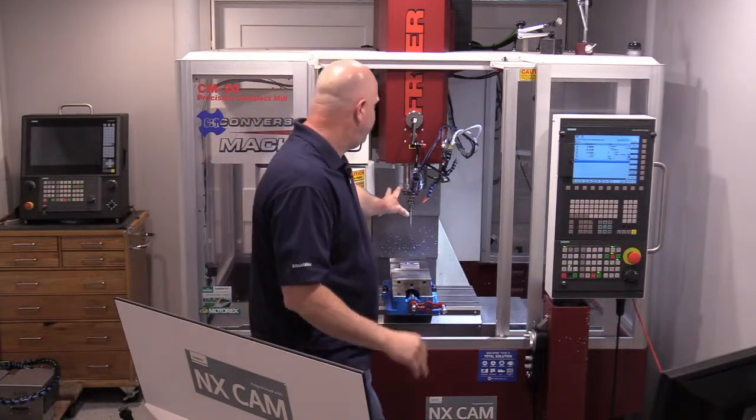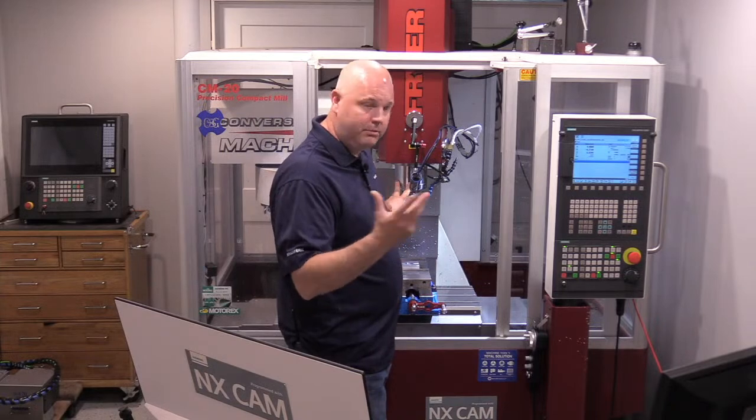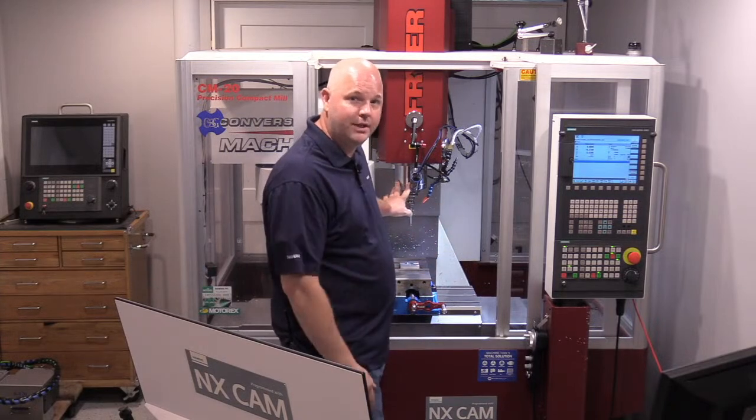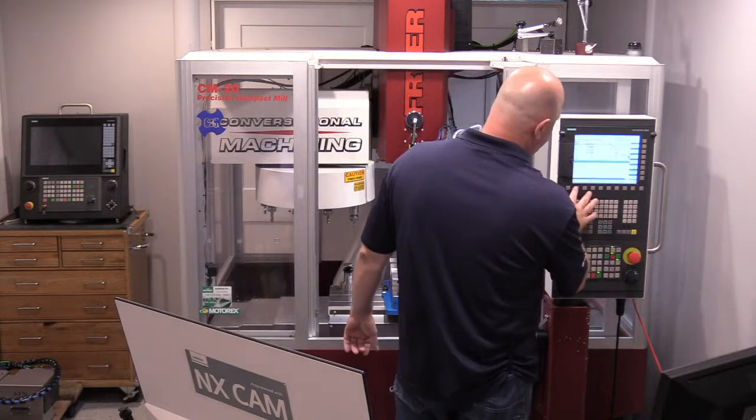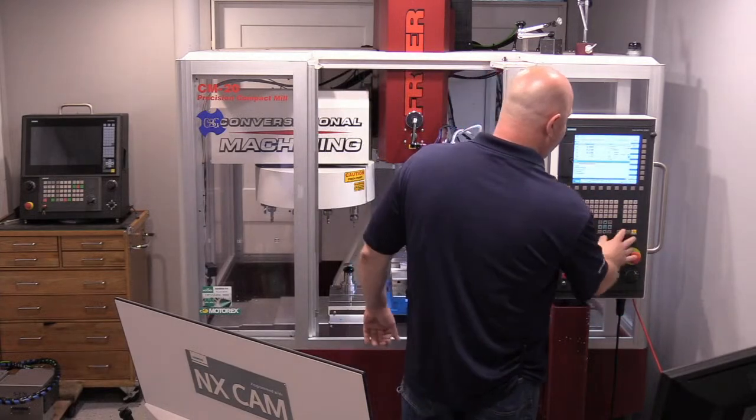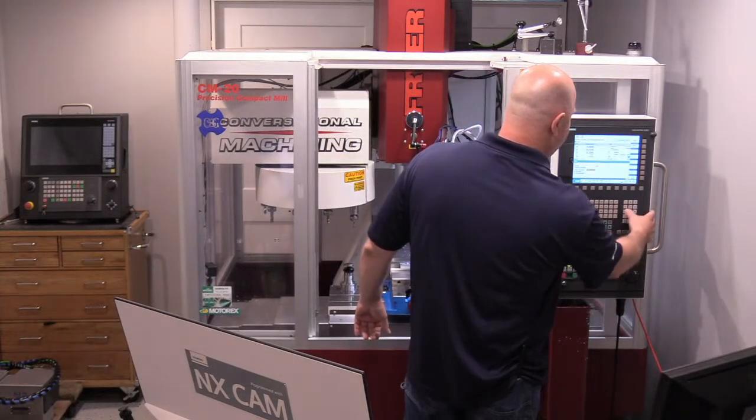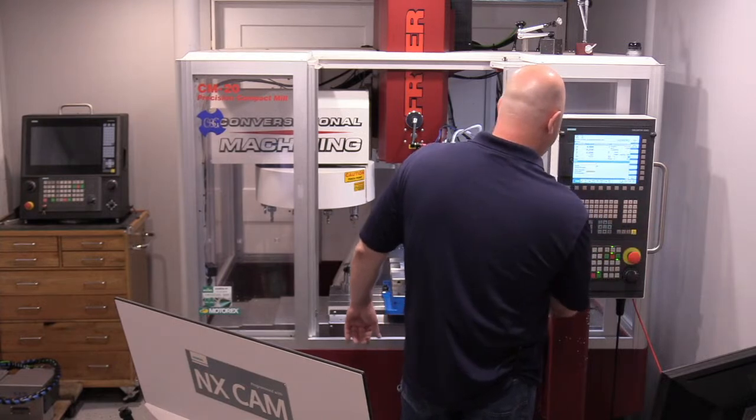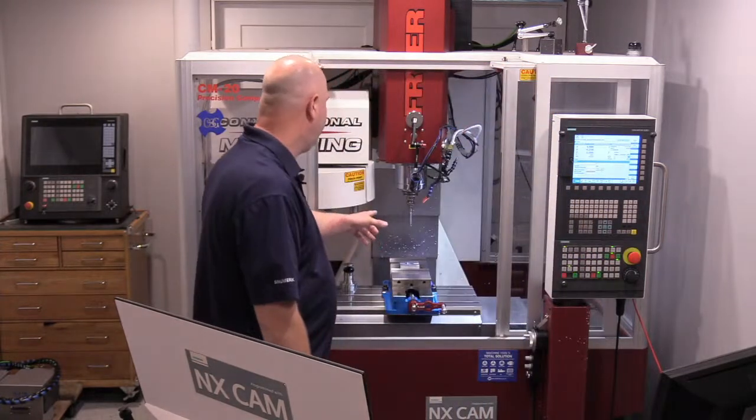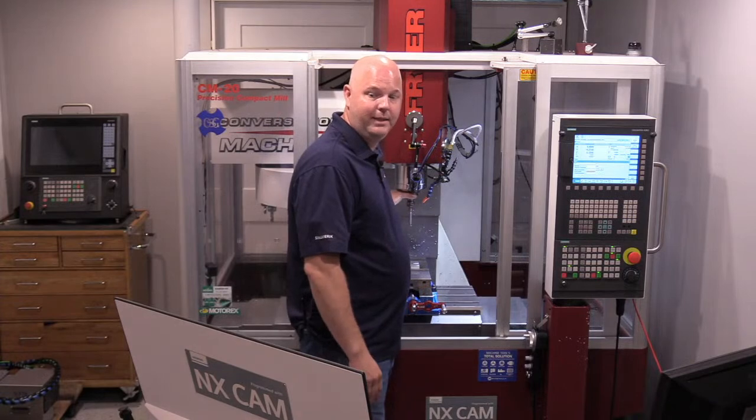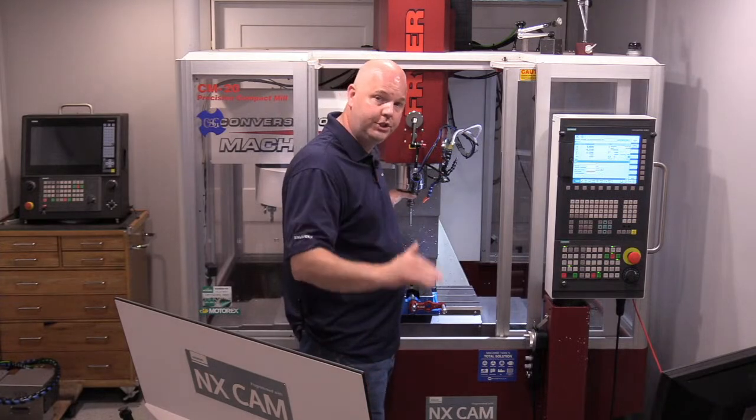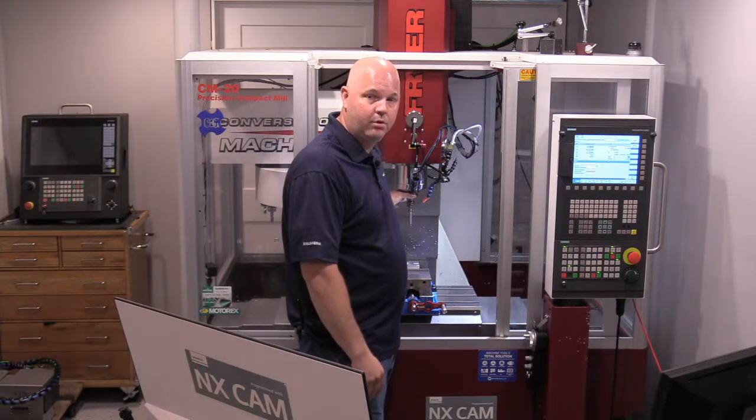So your machine doesn't have to be infinitely positionable. Mine happens to be. But as long as you can position to a location like an M19 or a tool change orient location, and the system, upon achieving this orient position, locks the spindle and will allow us to do a G1 feed move, then we can broach.